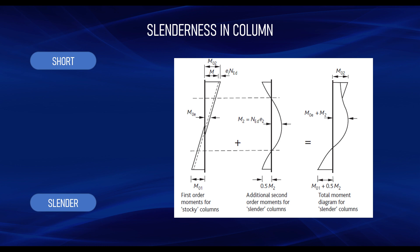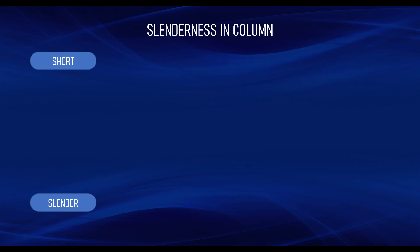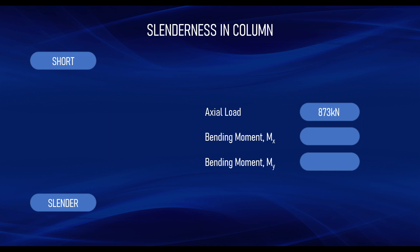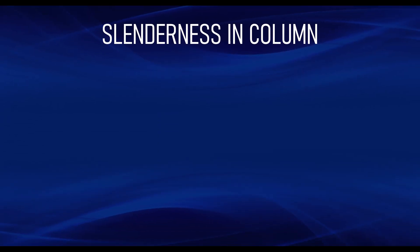Let's now take a look at an example of how to check if a column is short or slender using the Eurocode. The design parameters are: axial load N = 873 kN, bending moment along the x-direction M01 = 7.3 kNm, bending moment along the other direction M02 = 2.0 kNm, and the column size is 300 mm × 300 mm. We want to check whether this column is short or slender by referring to Clause 5.8.3 of the Eurocode.